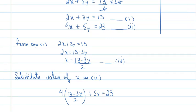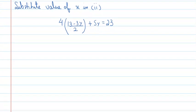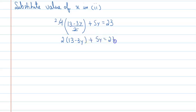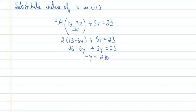अब इसको simplify करेंगे। देखिए, this is 4 and this is 2, तो यह cancel हो जाएगा। और कई बार students यहीं गलती करते हैं, calculation गलत करते हैं। तो अब आपके पास क्या हो गया? 2 into (13 minus 3y) plus 5y equal to 23. इसको आगे solve करेंगे: 26 minus 6y plus 5y equal to 23. So minus y equal to 23 minus 26, that is minus 3. And y is equal to 3, because minus and minus will cancel.